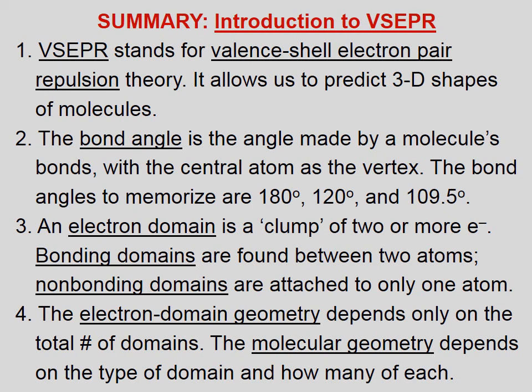Let's summarize our introduction to VSEPR. One, VSEPR stands for valence shell electron pair repulsion theory. It allows us to predict three-dimensional shapes of molecules. Two, the bond angle is the angle made by a molecule's bonds, with the central atom as the vertex. The bond angles to memorize are 180 degrees, 120 degrees, and 109.5 degrees.